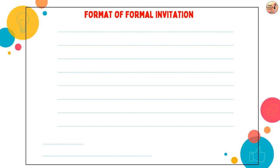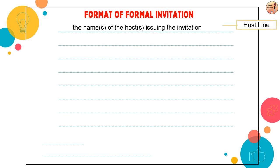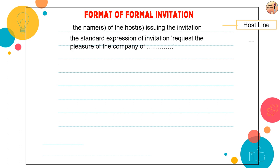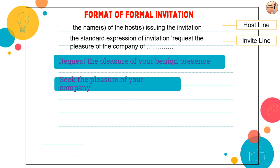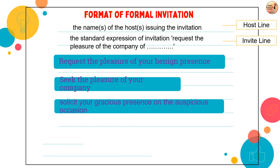Let's discuss the format of formal invitation, card form — the printed one. First, we mention the name of the host, the one who is inviting the people. For example, Mr. and Mrs. Sood invite. In case of school events, the principal, staff and students will be mentioned. After the name of the host, the standard expression of invitation is written — for example, 'request the pleasure of your benign presence,' 'seek the pleasure of your company,' or 'solicit your gracious presence on the auspicious occasion.' You can use any one of them.